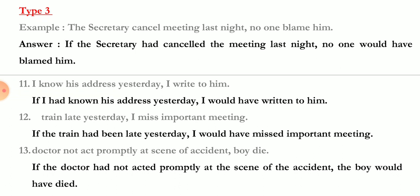'I know his address yesterday / I write to him' — 'If I had known his address yesterday, I would have written to him.' 'Train late yesterday / I miss important meeting' — 'If the train had been late yesterday, I would have missed the important meeting.' Past perfect in the if-clause and 'would have' plus third form in the main clause.